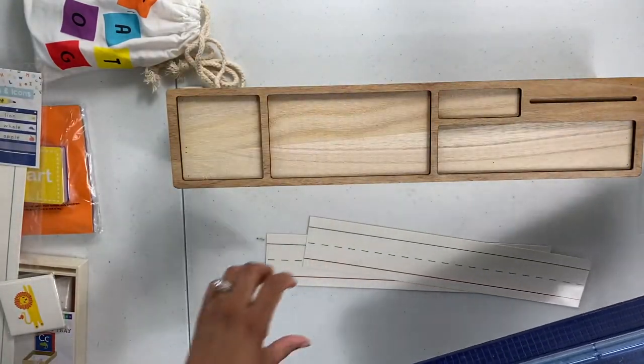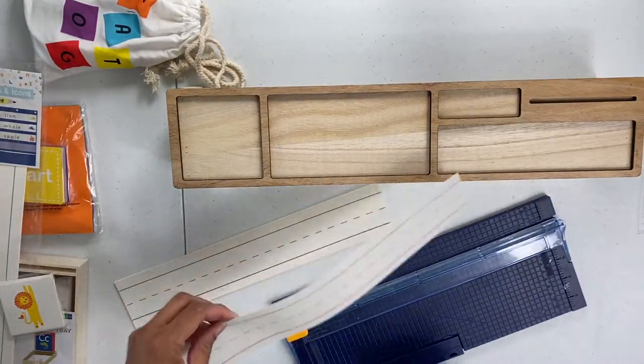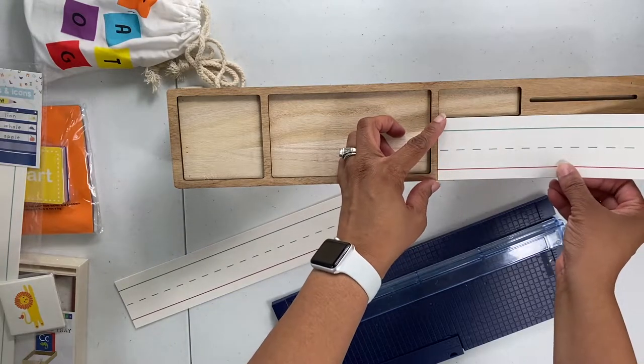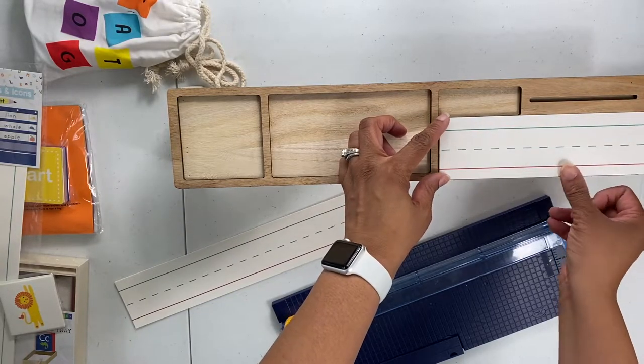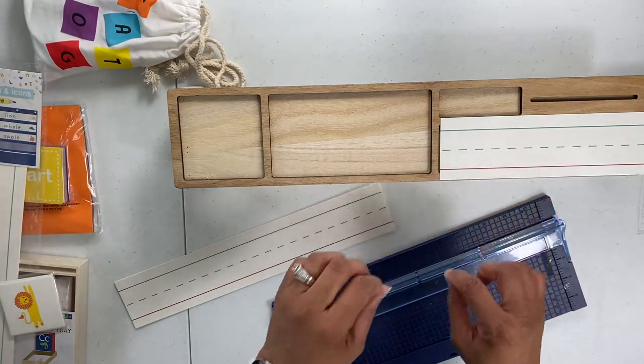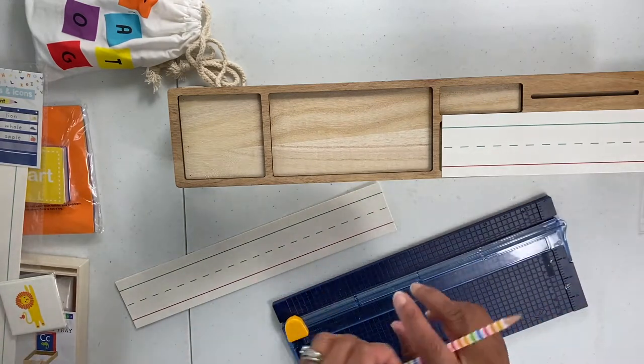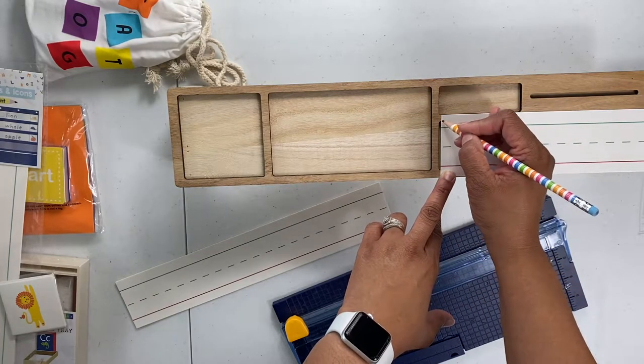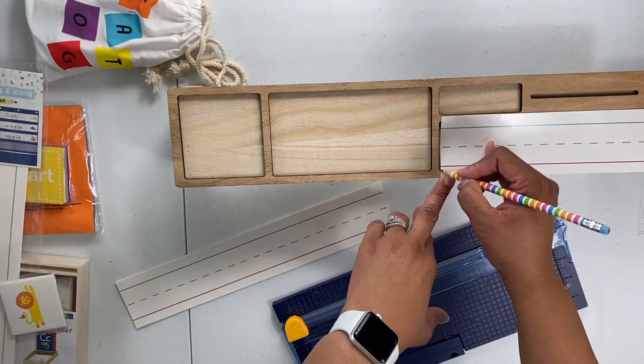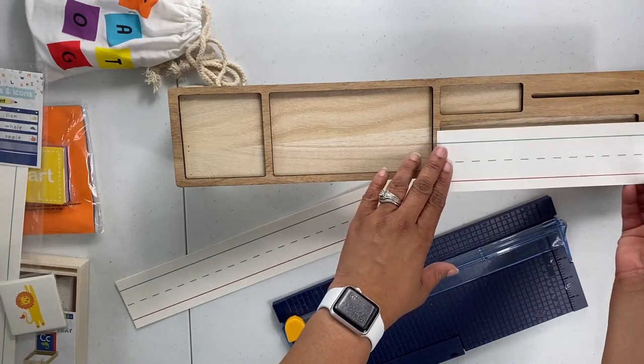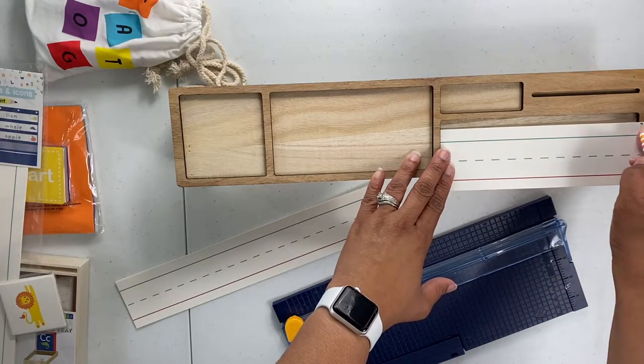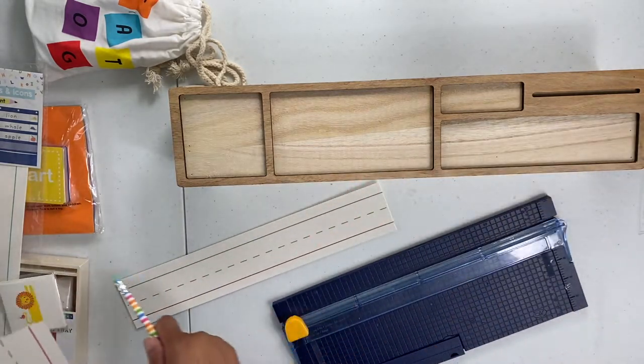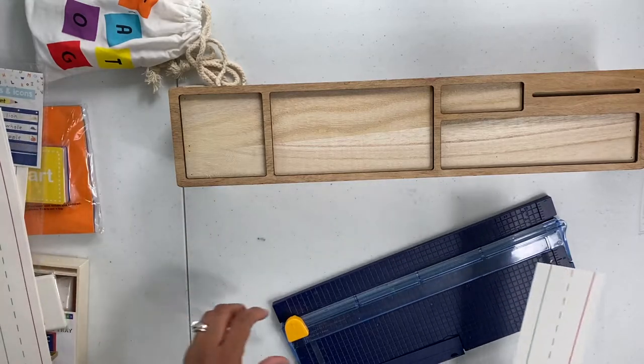So we're just going to grab our straight edge cutter here and cut off, I don't know, like just a tiny bit. I guess I should probably mark it. Let's mark it so we know exactly where we're cutting. I am just going to mark this really easily. I mean like nothing fancy. Mark right there. Mark right there. And then we're going to mark the length so I know how long to make it. Right there.